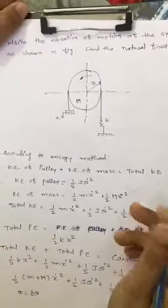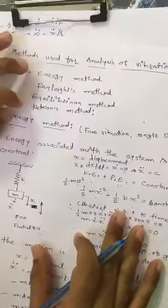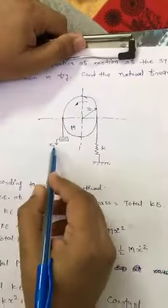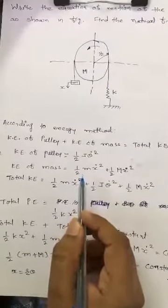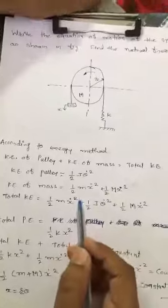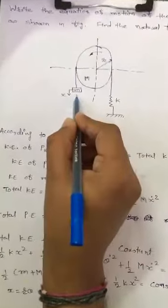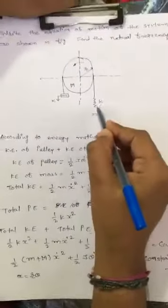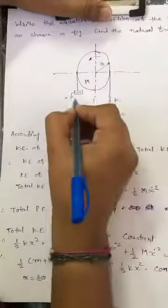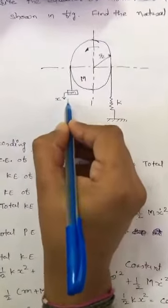Before going to the solution, we will identify which method to apply. As mentioned previously there are four methods: the energy method, Rayleigh's method, the equilibrium method, and Newton's method. We have studied the energy method today, so we will apply it. According to the energy method, x displacement is given to the body, and we deal with the energies associated with the system — kinetic as well as potential energy.